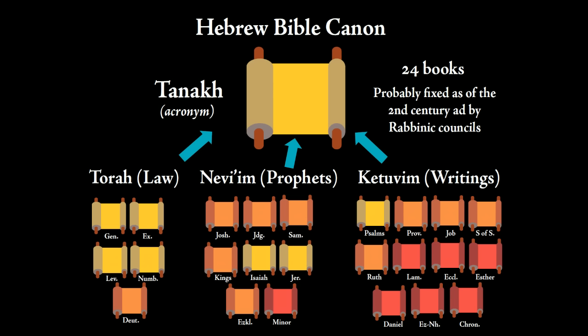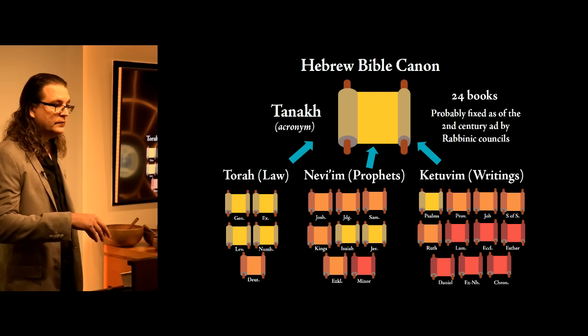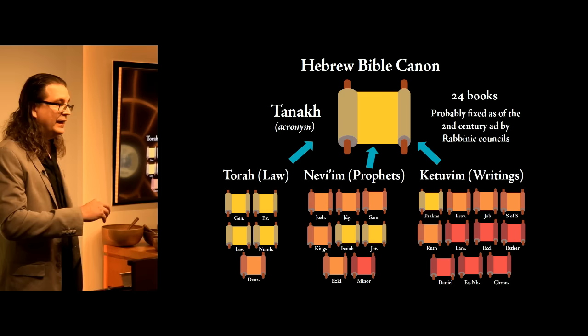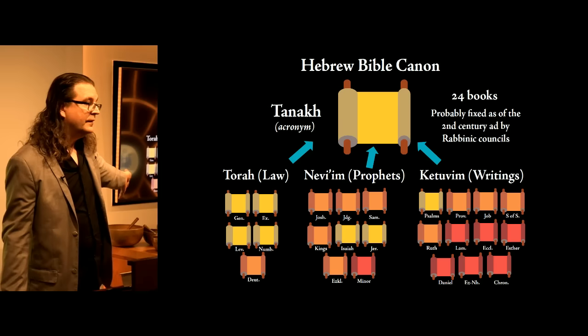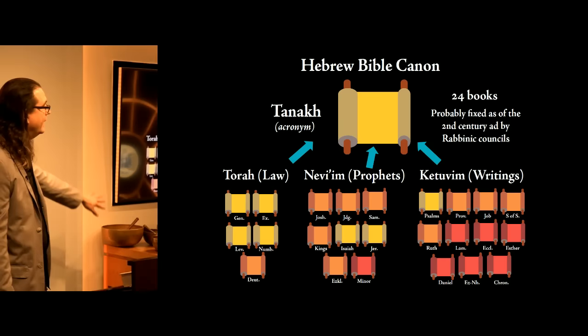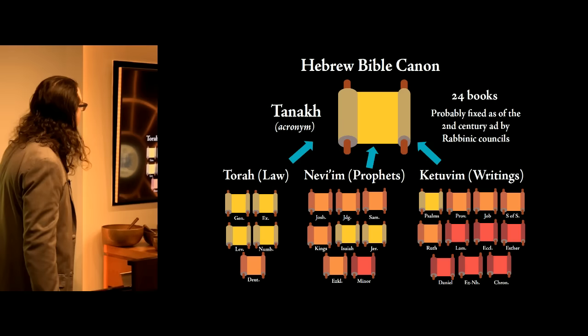It's not clear exactly when this canon was finalized. There may well have been very early Jews keeping to a more constrained canon, and there were arguments — for example, that Song of Solomon, which doesn't mention God and is really an erotic love poem, maybe shouldn't make it in. So even among the rabbis there was debate, but the canon was perhaps fixed by early second-century rabbinic councils.